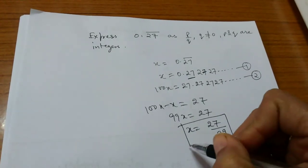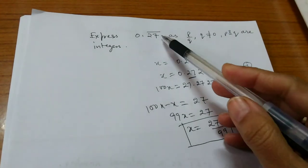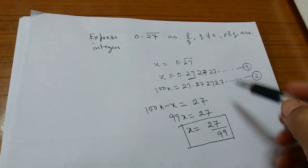This is the representation of 0.27 bar in the form P by Q.